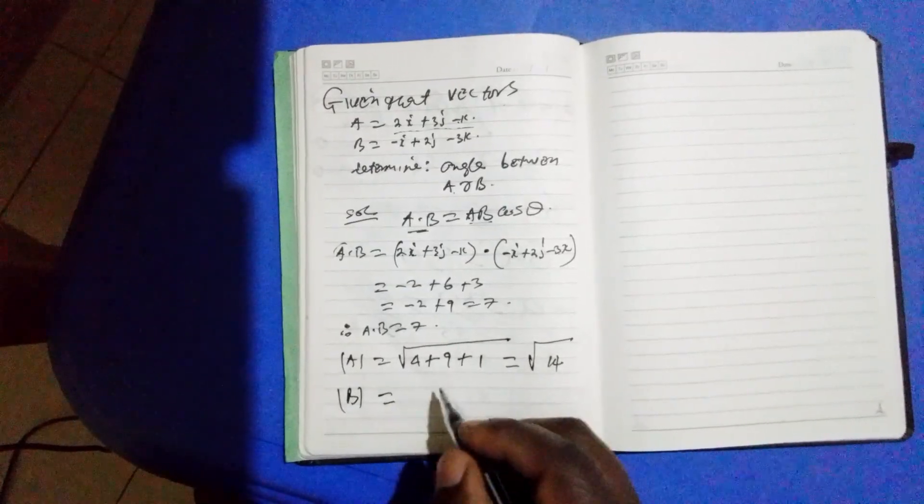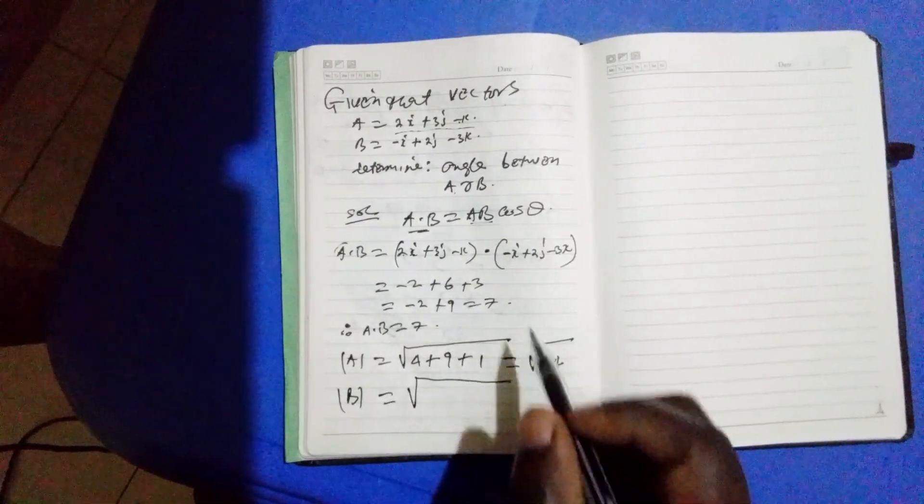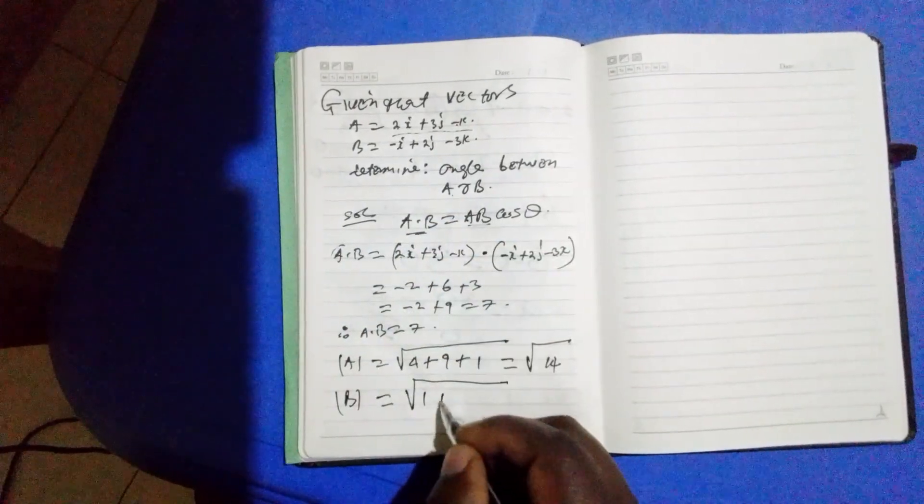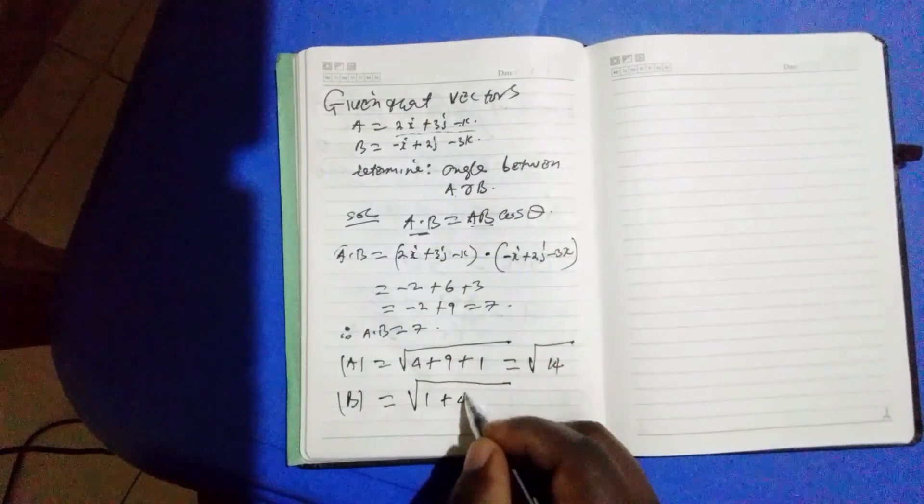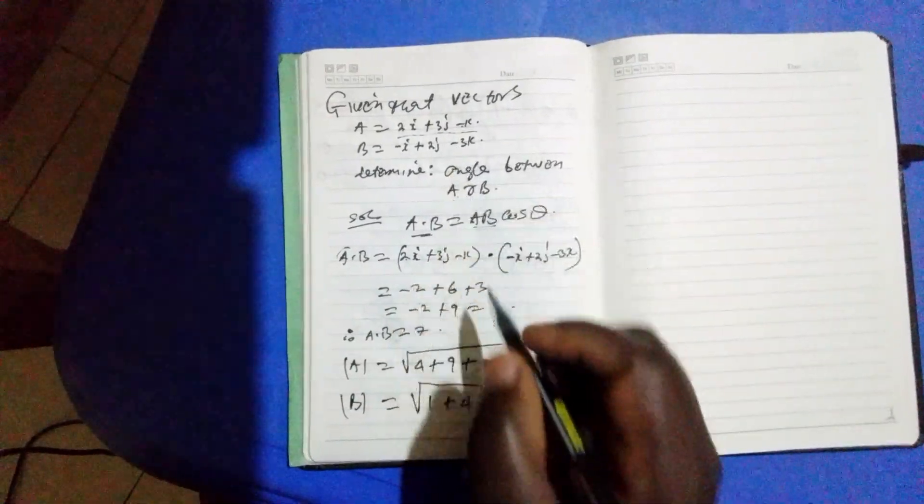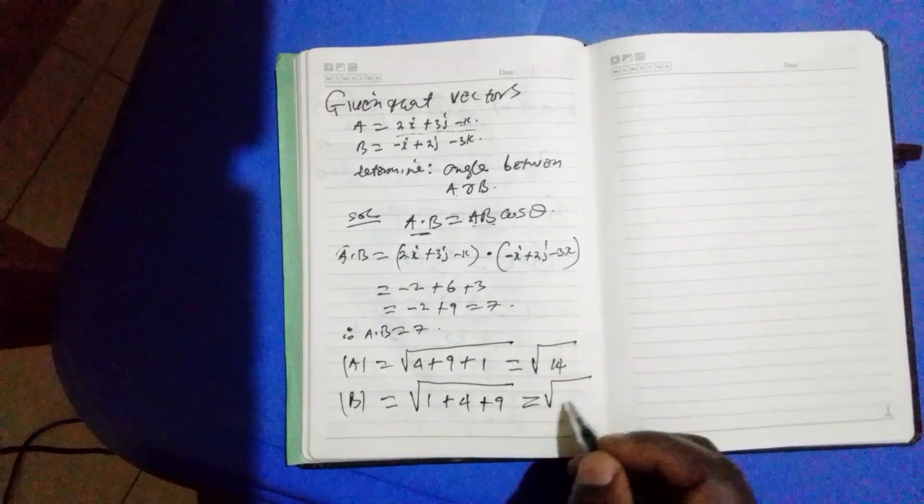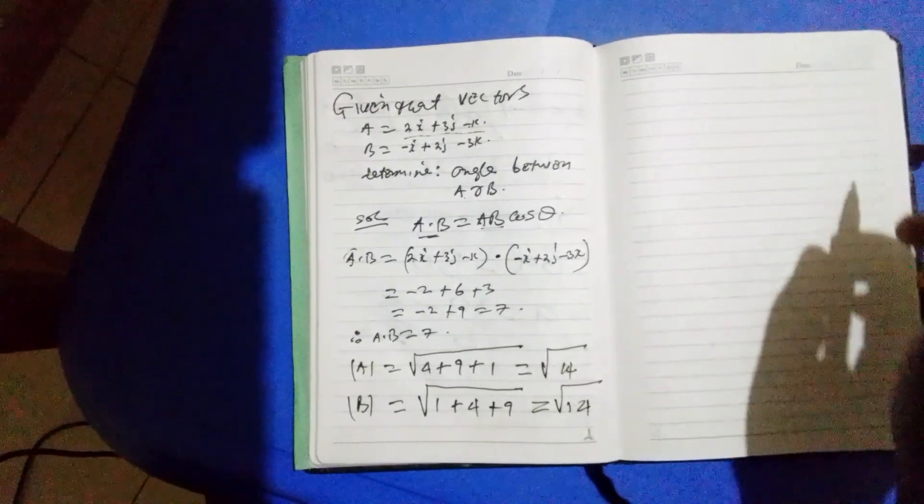Now we can make the magnitude of b. So we take negative 1 squared, which is 1, plus 2 squared, which is 4, plus negative 3 squared, which is 9. This equals to the square root of 14.